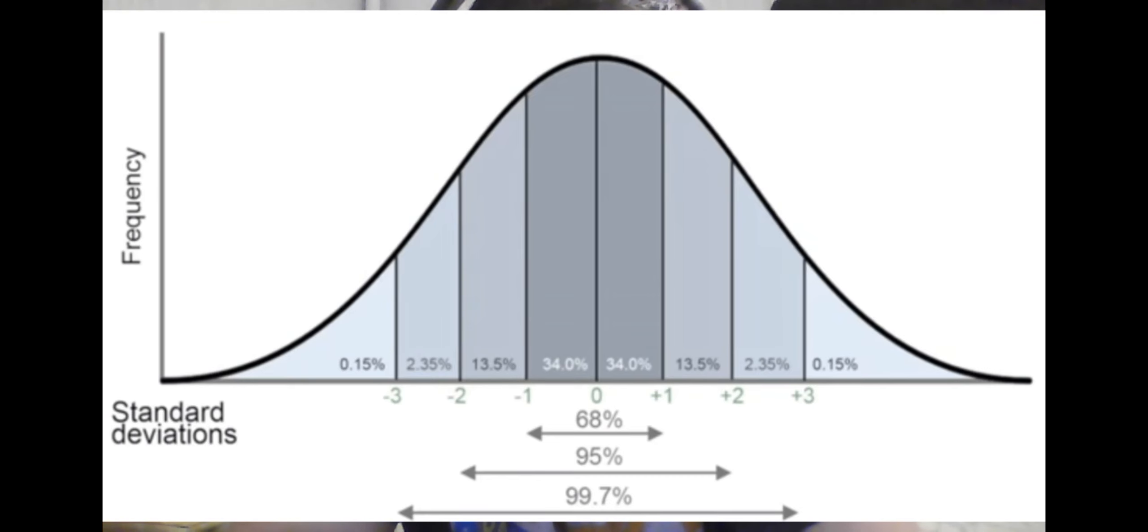A probability density function is simply a function that tells you the distribution of a probability. For example, the bell curve is a probability density function because it tells you the greatest likelihood of something occurring is near the center, while the least likelihood is farthest from the center.